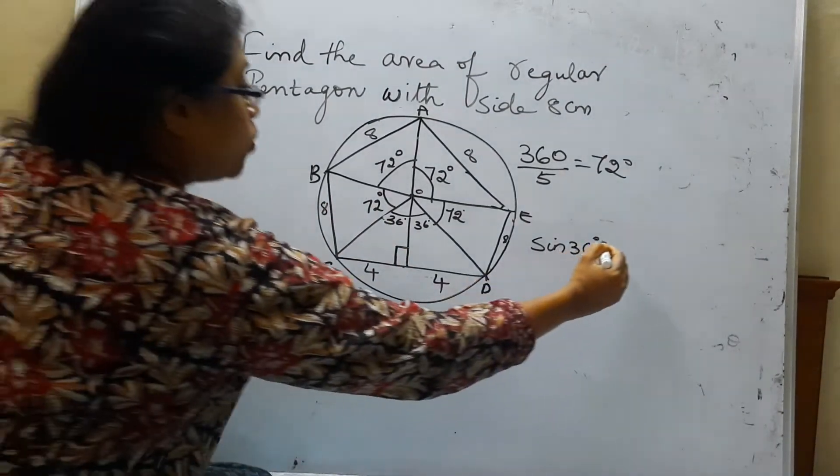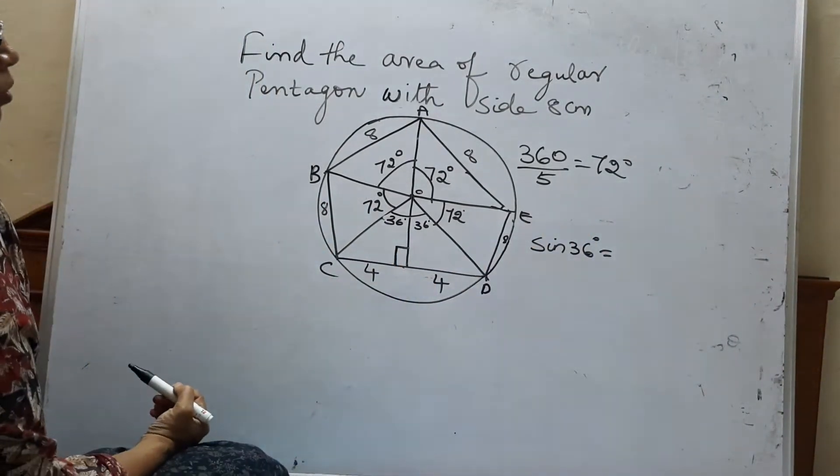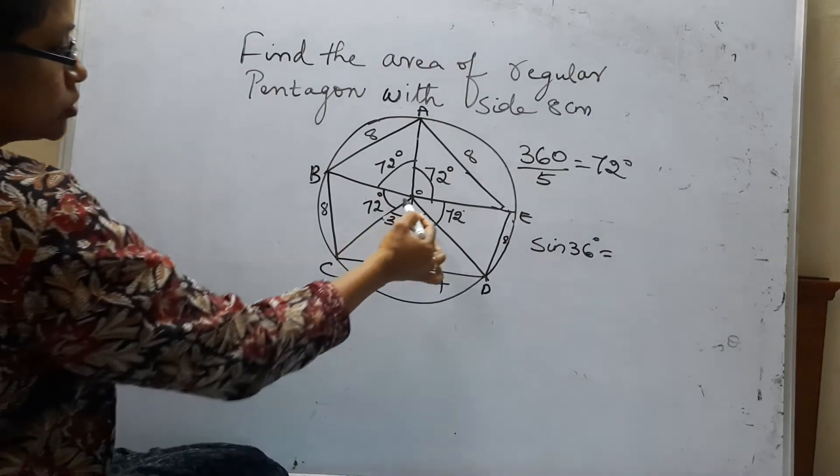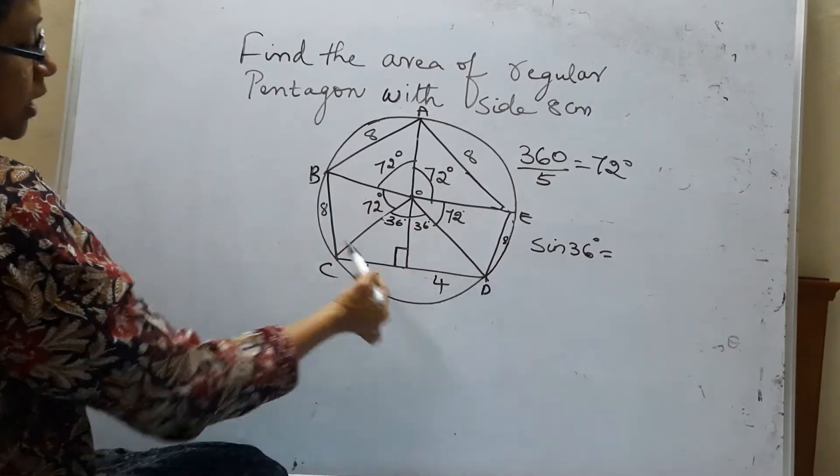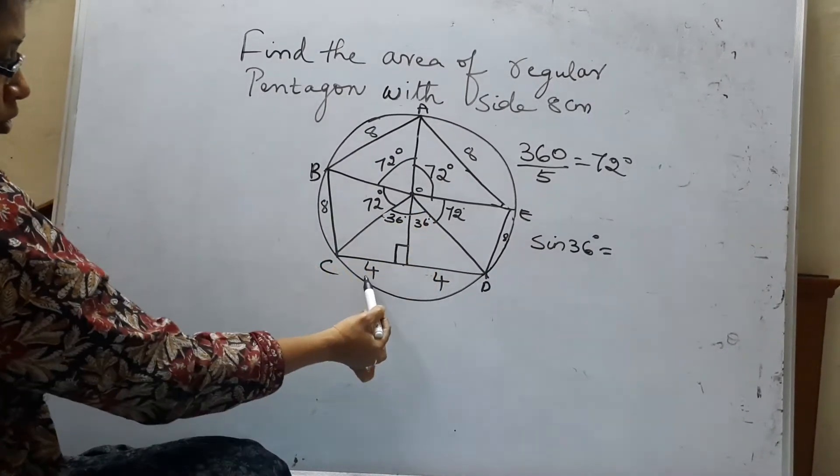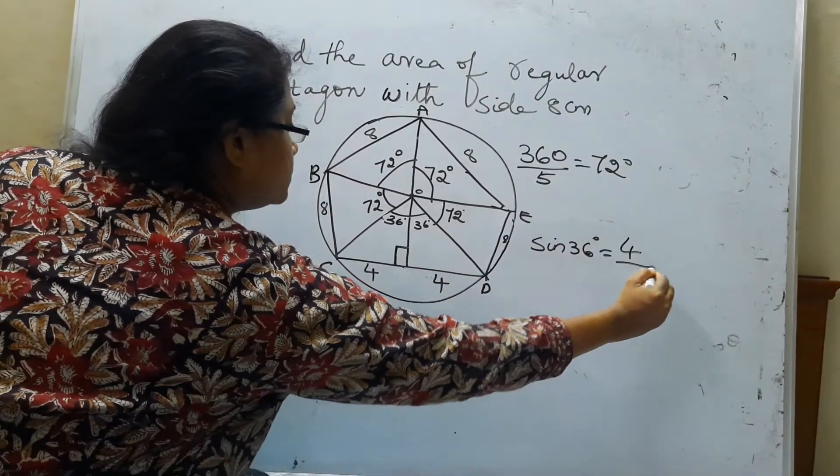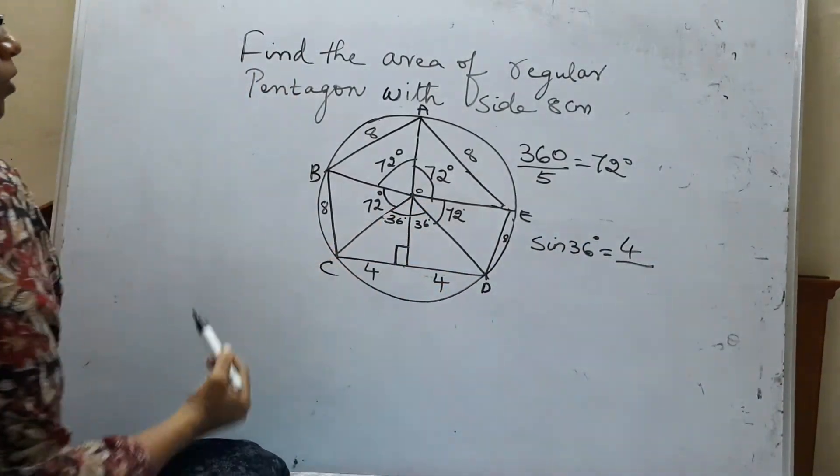So sin 36 is the side opposite to theta by hypotenuse. The side opposite to theta is 4. So 4 by hypotenuse OC.